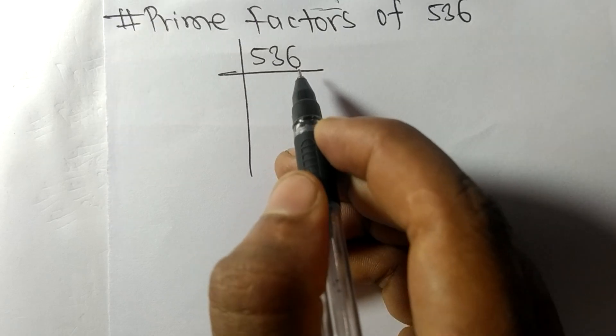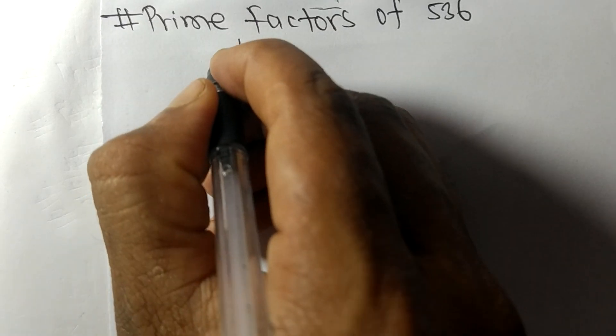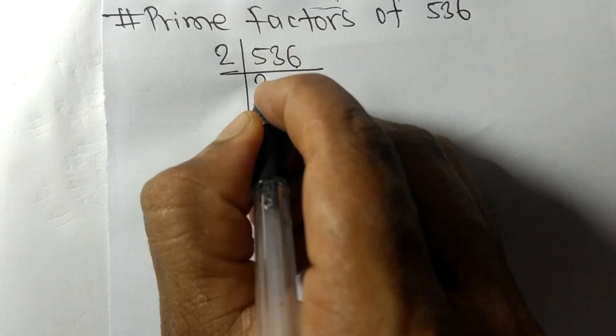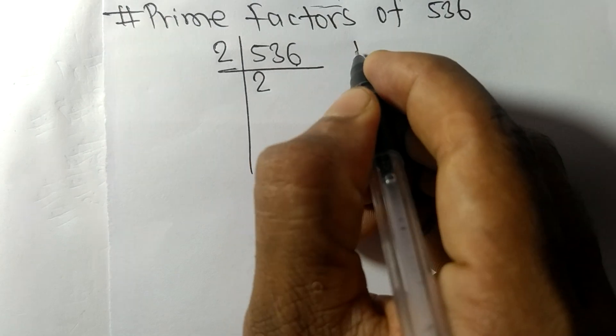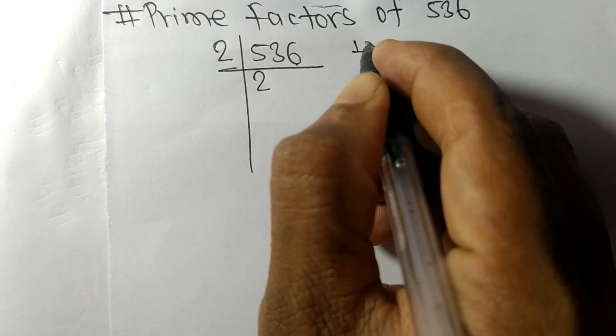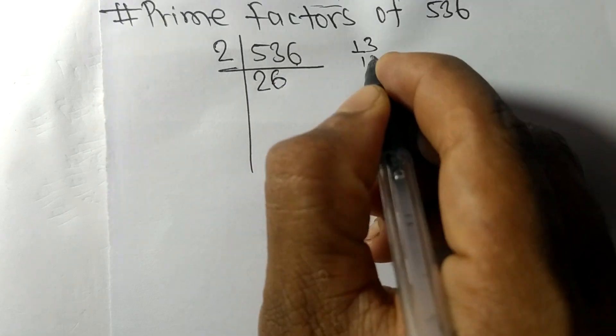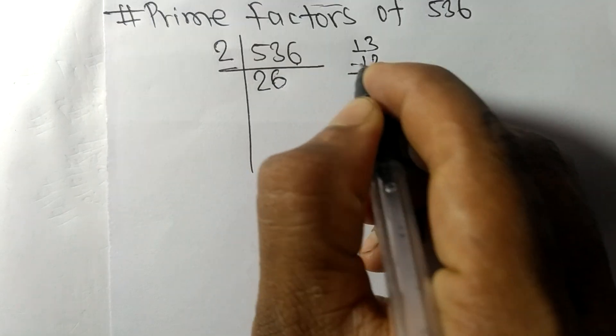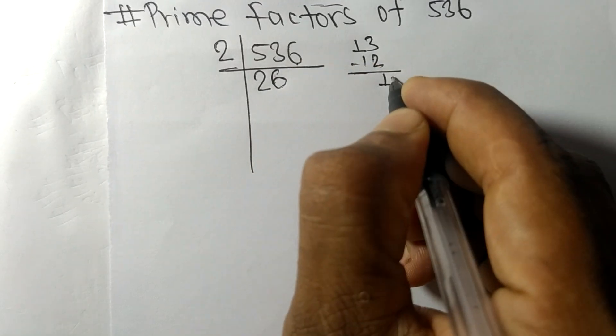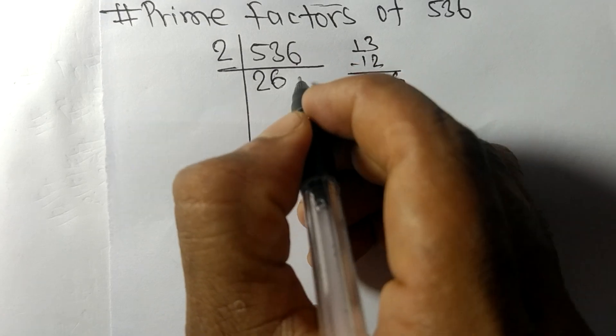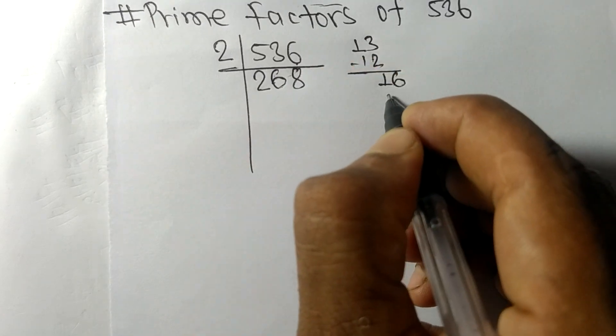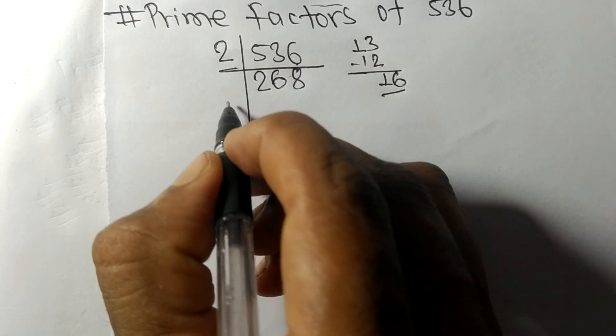2 times 2 is 4, remainder 1. Bring down the 3, that's 13. 2 times 6 is 12, remainder 1. Bring down the 6, that's 16. 2 times 8 is 16.